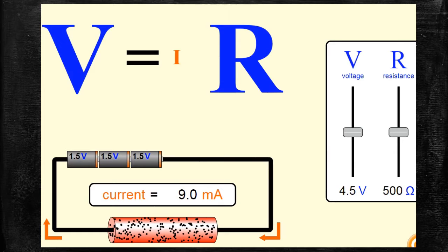Today we are going to learn the relationship between current and potential difference. According to Ohm's law, the resistance of the conductor is kept constant. We know that current flowing through the conductor is directly proportional to the potential difference across the conductor. Using this simple simulation, we are going to see how the current value varies with respect to the potential difference across the conductor.